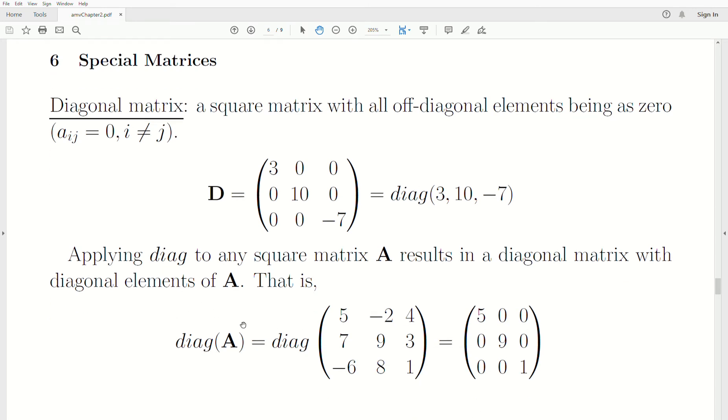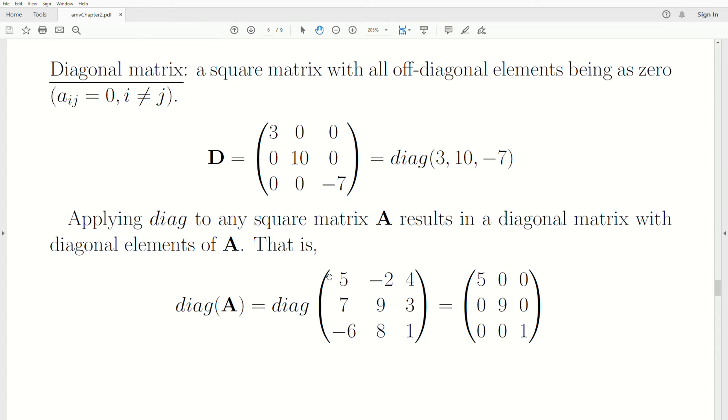Now, you can apply the diag function to any square matrix. And what it does is it picks off the diagonal elements and then creates a diagonal matrix with that. So if A is not a diagonal matrix like this, but then we take the diag of it, that takes the diagonal elements and creates a diagonal matrix with the off element zero.